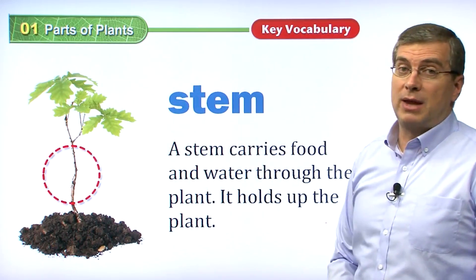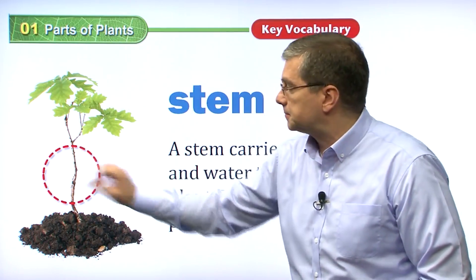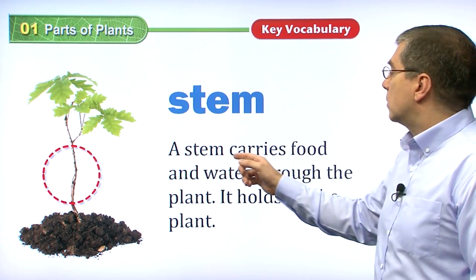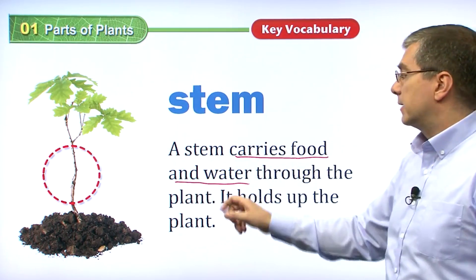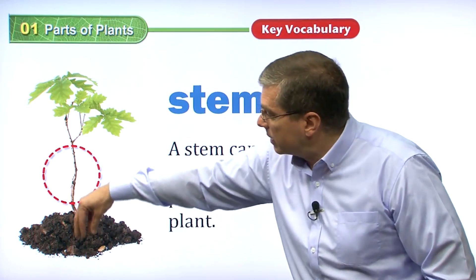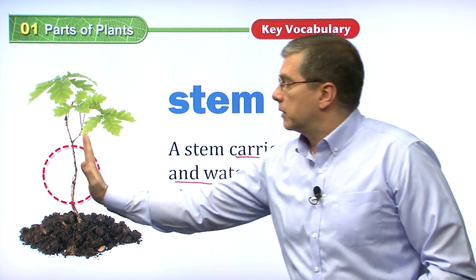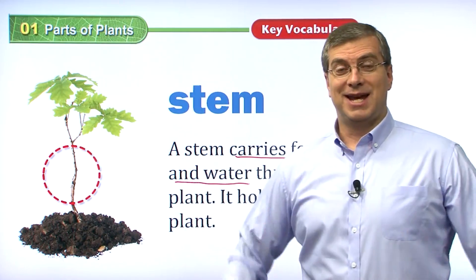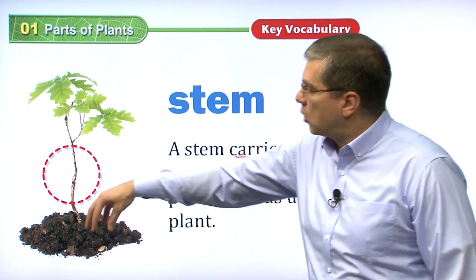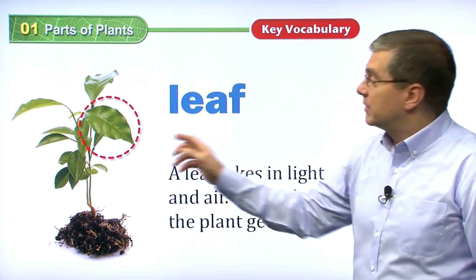Let's talk about the next part of the plant: the stem. We started at the bottom with the roots, and now we're coming up. The stem carries food and water through the plant. The roots take in water and food from the soil, and the stem carries that food up to the leaves. The stem holds up the plant — it's like the trunk of your body, the main structure of the plant, holding it above the soil.